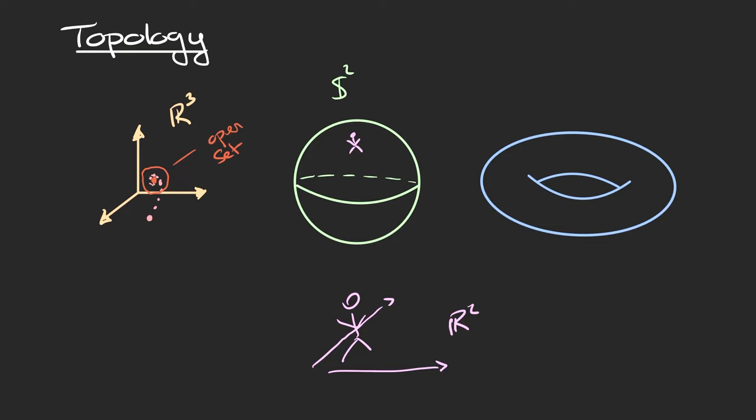One question is how the surface S² differs from R². One difference is that on the sphere, you can walk straight in one direction, continue walking, and end up back where you started. The corresponding property doesn't hold for the plane R², because in the plane you can walk forever in any direction without ever returning to where you started if you keep a straight heading.